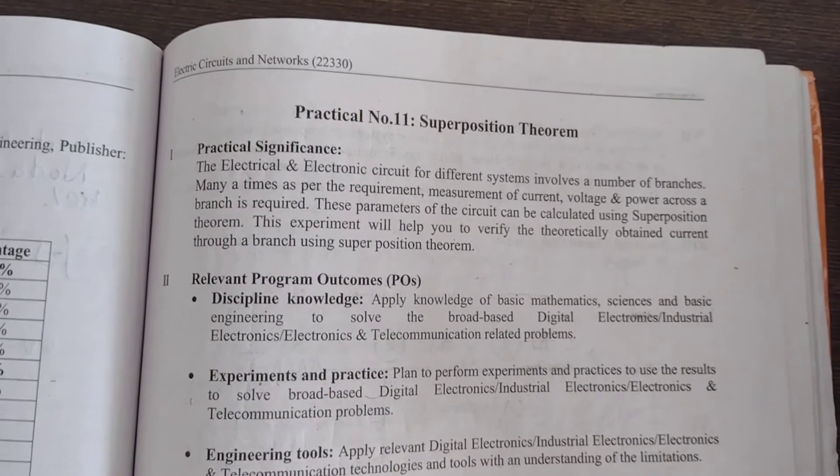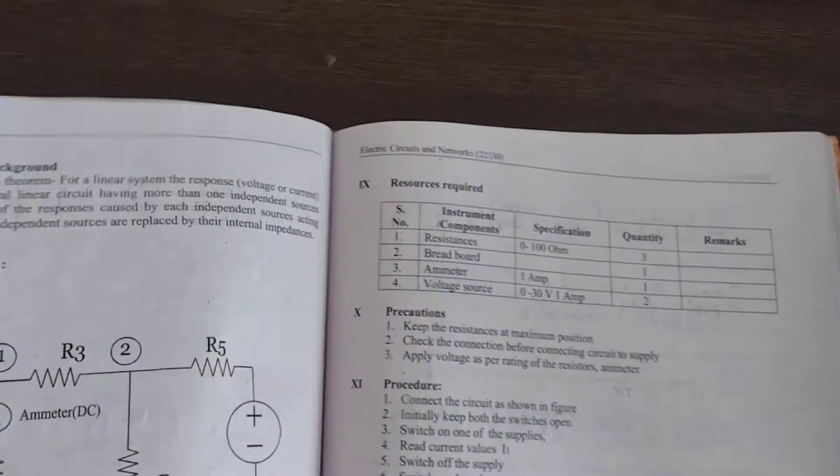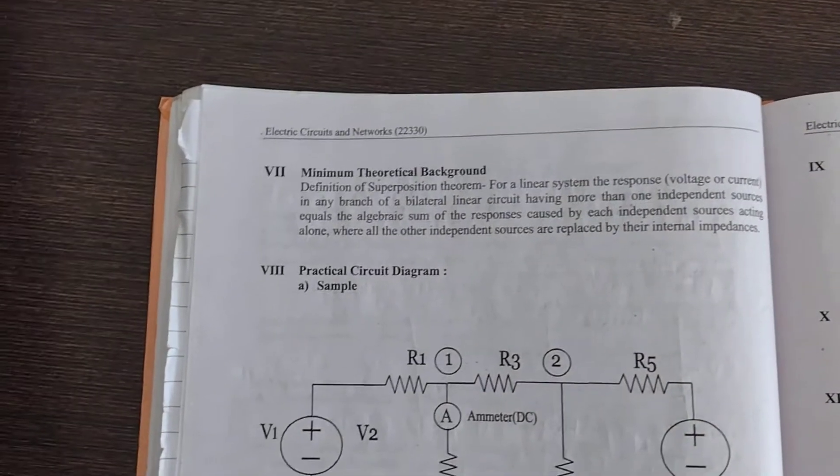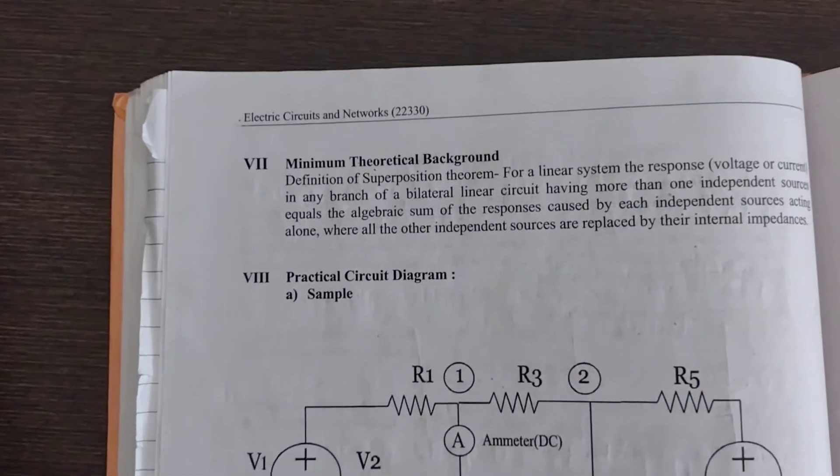Practical Number 11: Superposition Theorem. The definition of Superposition Theorem states: For a linear system, the response in any branch of a bilateral linear circuit having more than one independent source equals